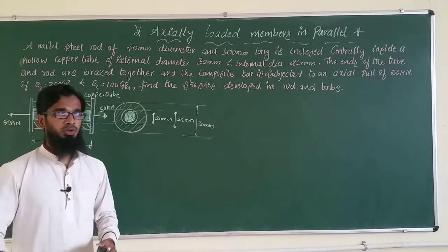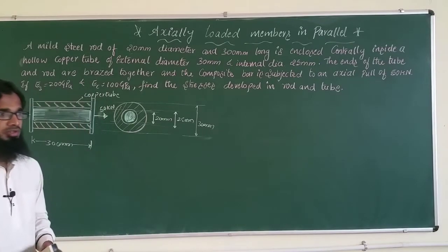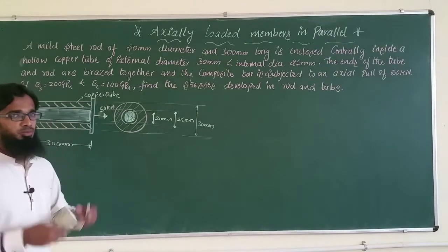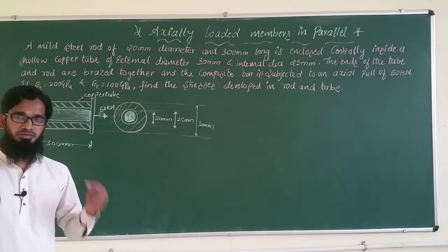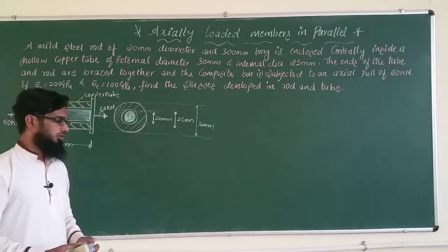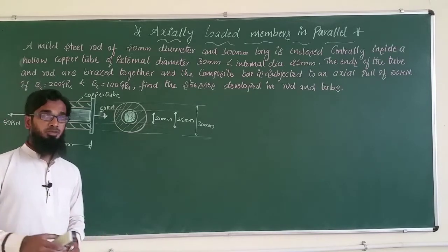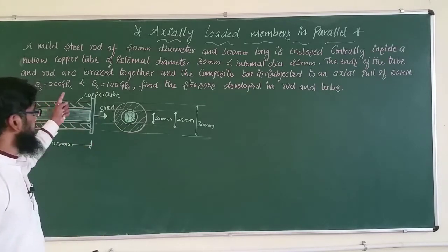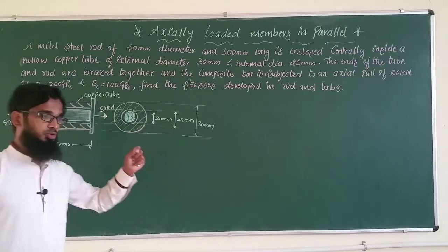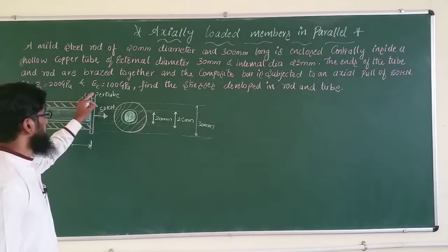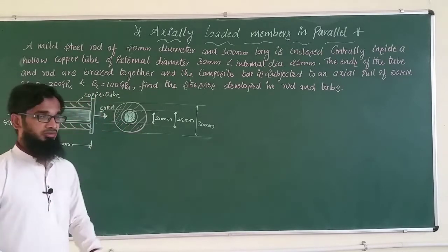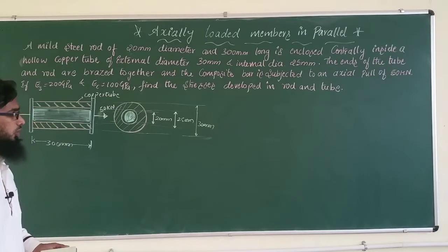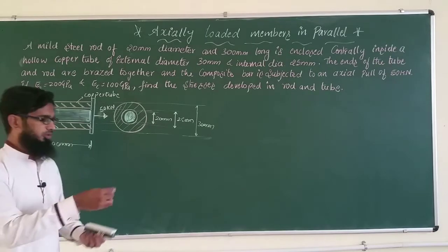We need to find the stresses induced in the steel rod as well as the copper tube. Since the material is different, there will be a different Young's modulus for each. Young's modulus of steel is 200 GPa and Young's modulus of copper is 100 GPa.